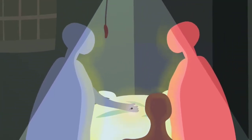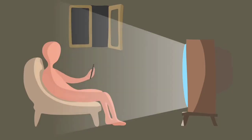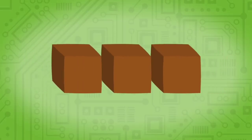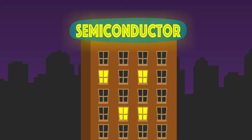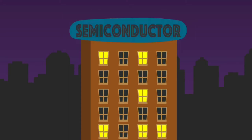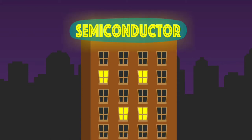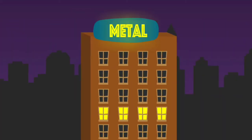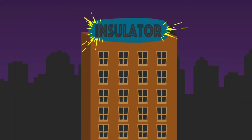The transistor is probably the greatest invention of the last century, or perhaps one of the greatest of all time. A transistor is just three semiconductors glued to one another. A semiconductor, as the name suggests, is a material that conducts, but only partly. The conductivity of a semiconductor, like silicon or germanium, lies between the conductivity of a metal, like copper, and an insulator, like rubber.